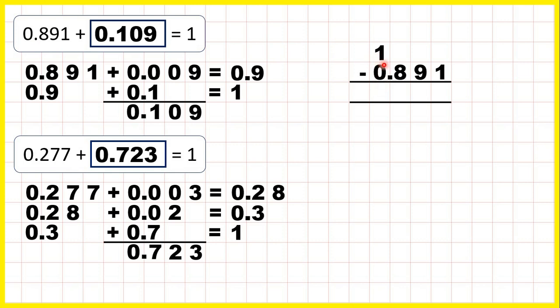Now, one is the same as 1.000, because we can always write a decimal point and then zeros on the end of a whole number, because all these zeros tell us is that we don't have any tenths, hundredths, or thousandths in the number 1.